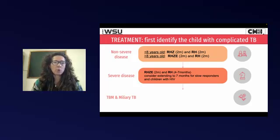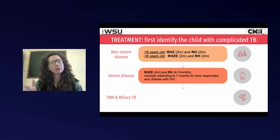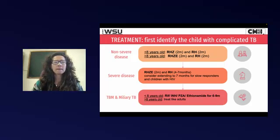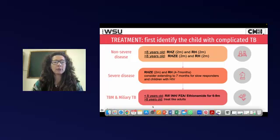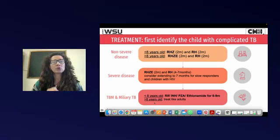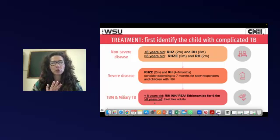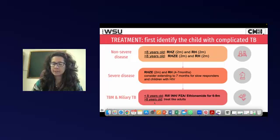For severe disease, we treat as we always have — Rifafor for two months and then Rifinar for either four or seven months depending on the clinical scenario. It's very important to note that TBM and miliary TB are very different. For TBM and miliary TB, you're using all four drugs for six or nine months, and we replace ethambutol with ethionamide, which has much better penetration of the blood-brain barrier. That substitution is only for children eight years and younger.